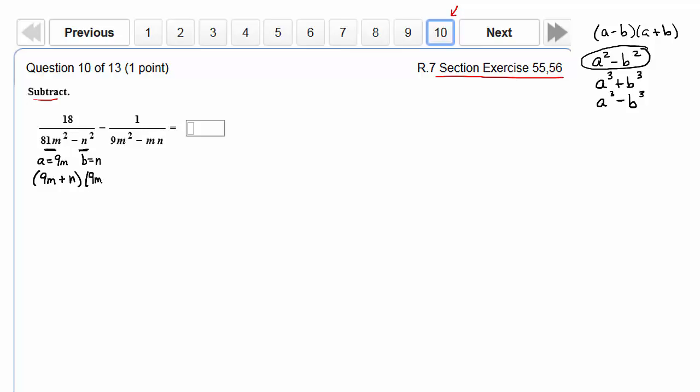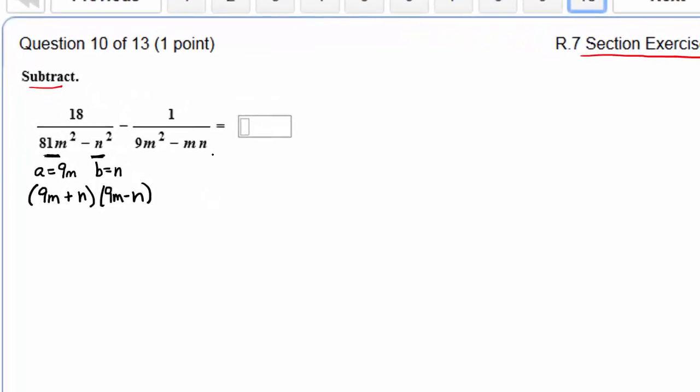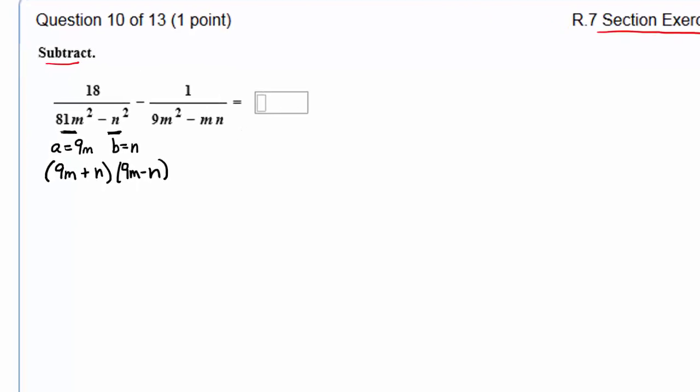That's our first denominator in factored form. How about the second denominator? Once again, we want to find what's in common. Is there anything in common in the two terms, 9m squared and negative mn? Yes, m. So we can pull that out, and what's left behind is 9m minus n.